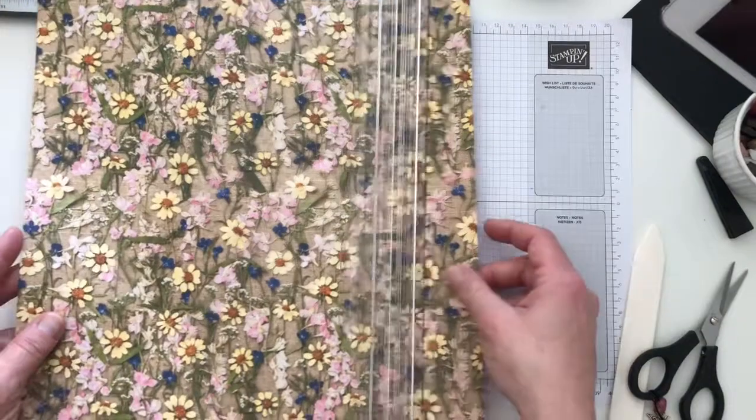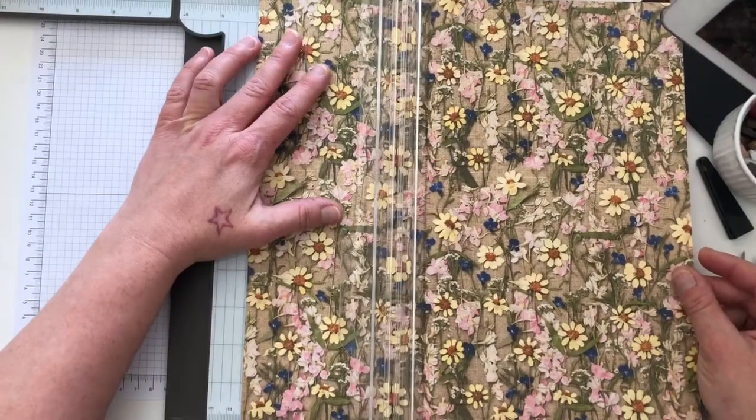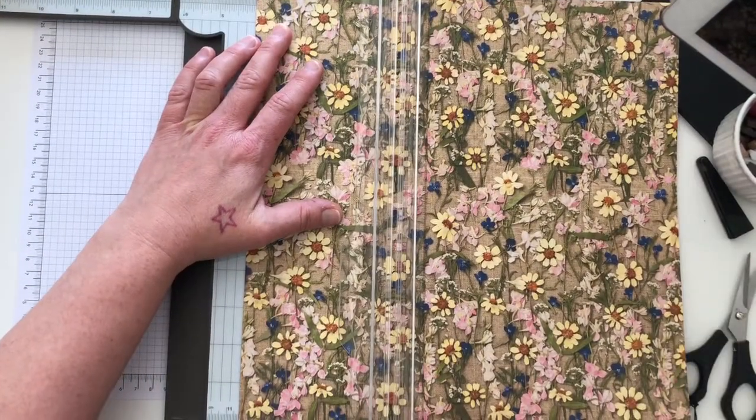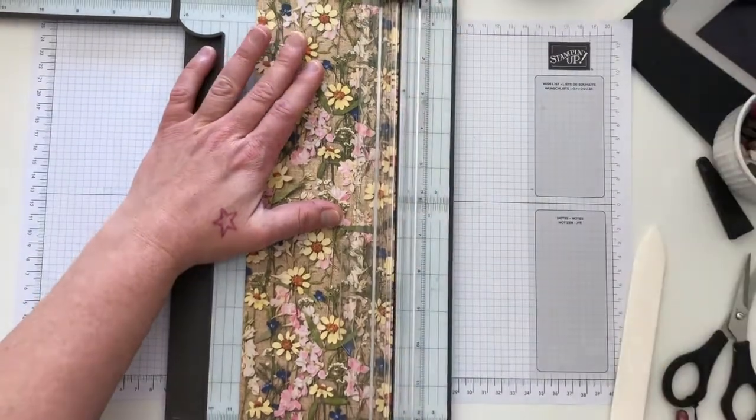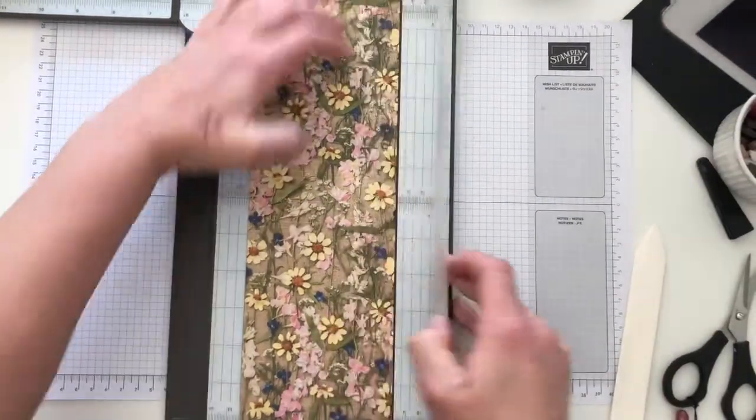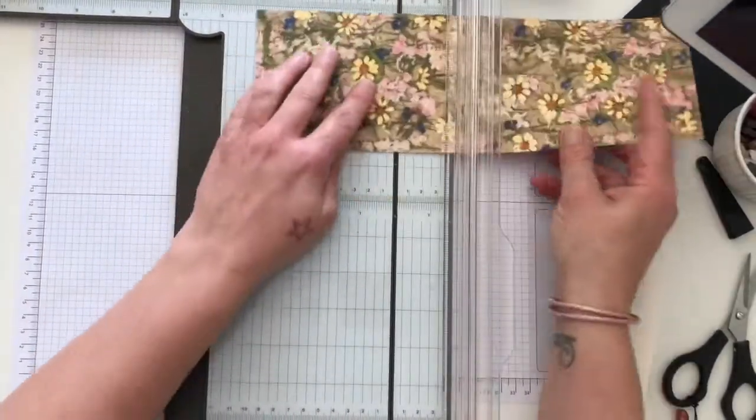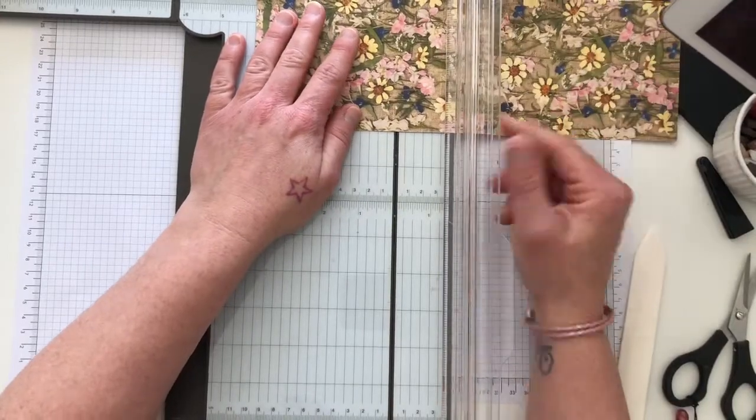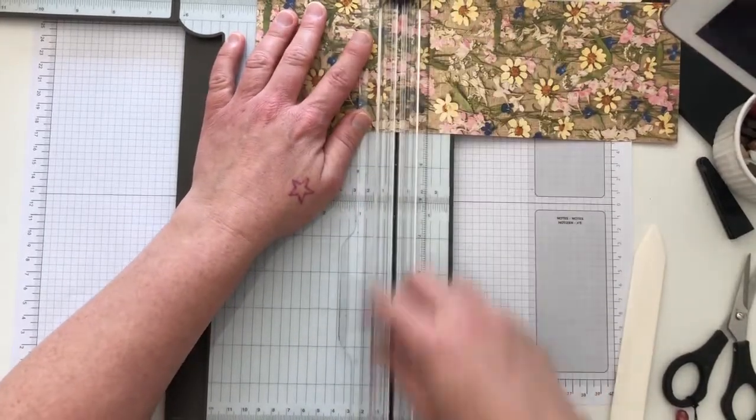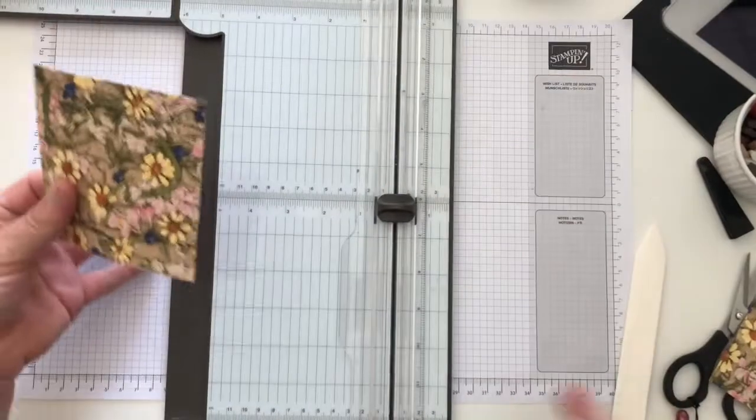So my DSP for my lid measures 10.2 by 10.2, but if you want to be in old money, it's basically 4 inches. So I'm going to cut that.